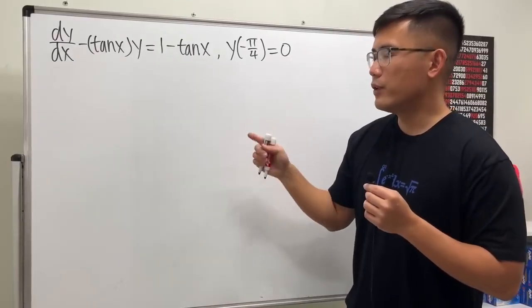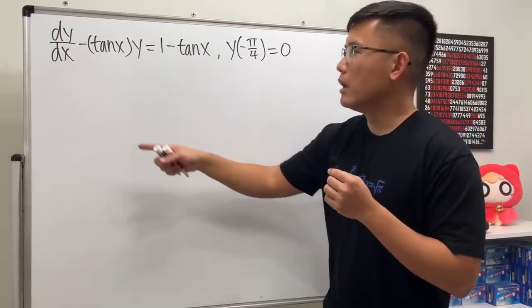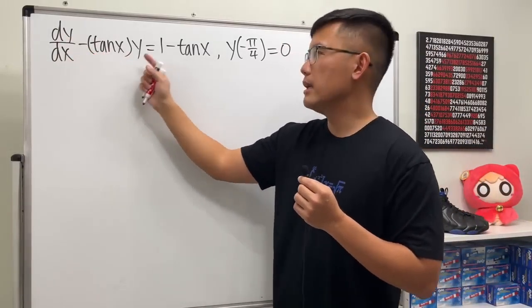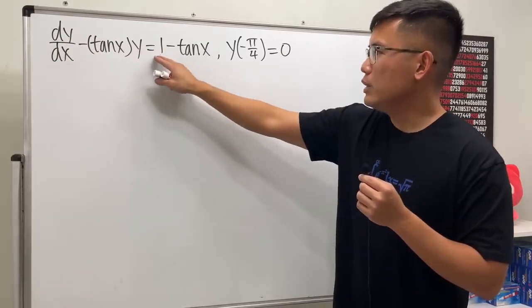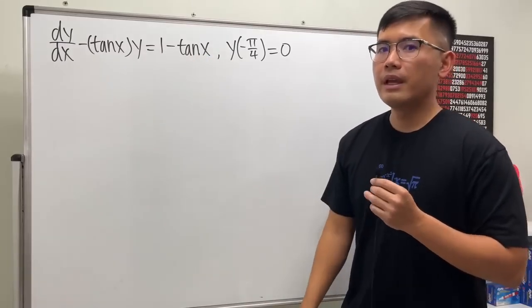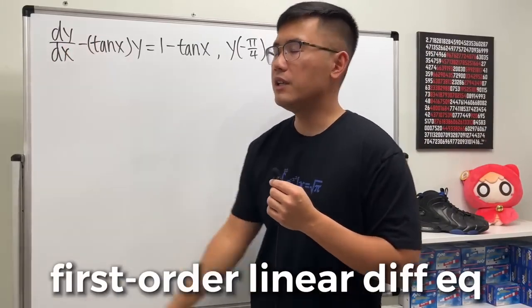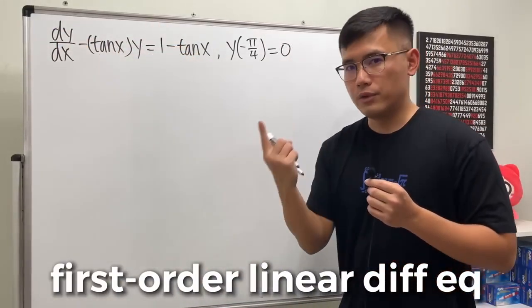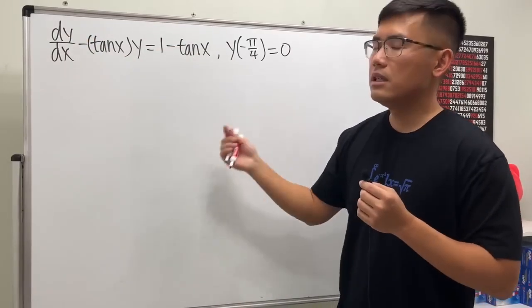This one is actually very different than the previous two because it is not separable. We have dy/dx minus tangent x multiplied by y, so the y is not inside the tangent. This is called a first-order linear differential equation because we have the first derivative, and all the derivatives and y's are of the first power.